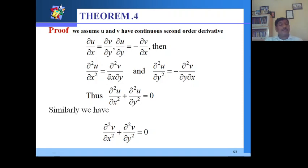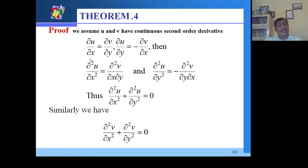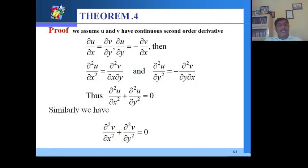Similarly, differentiating the Cauchy-Riemann equations partially to obtain second-order terms for v gives ∂²v/∂y² and ∂²v/∂x², with the mixed derivatives being equal. We get ∂²v/∂x² + ∂²v/∂y² = 0, so v is also harmonic. Therefore, if a function is analytic, both its real and imaginary parts are harmonic functions.